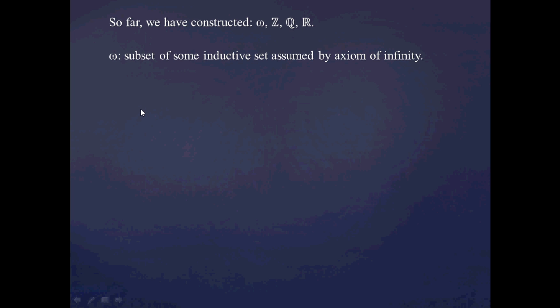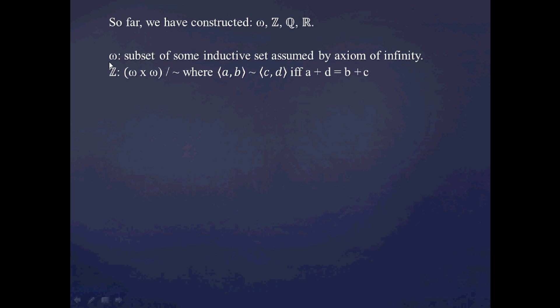Just to very quickly go over the procedure for constructing each one: we had omega first, the set of natural numbers. What we did is we had the axiom of infinity, which is one of the ZFC axioms, which postulated that there's at least one inductive set sitting out there in our set-theoretic universe. We then considered some subset of that assumed set, and this turned out to be the set of natural numbers — so we got the natural numbers from the axiom of infinity.